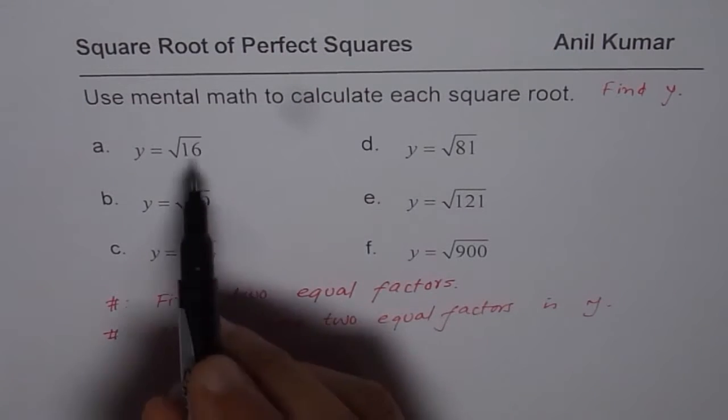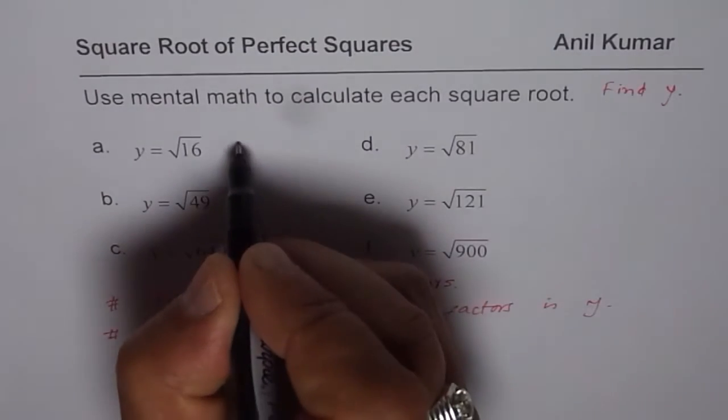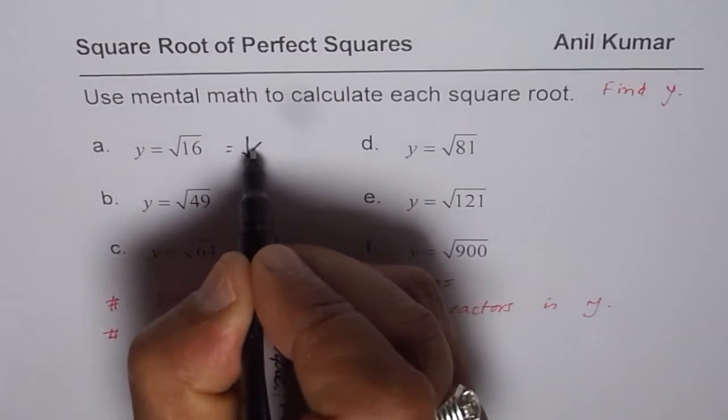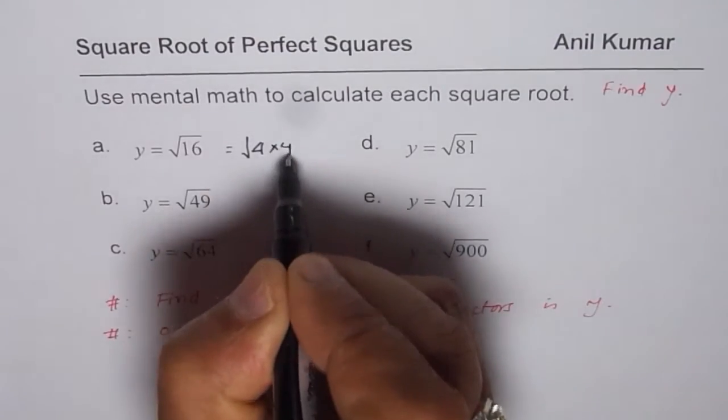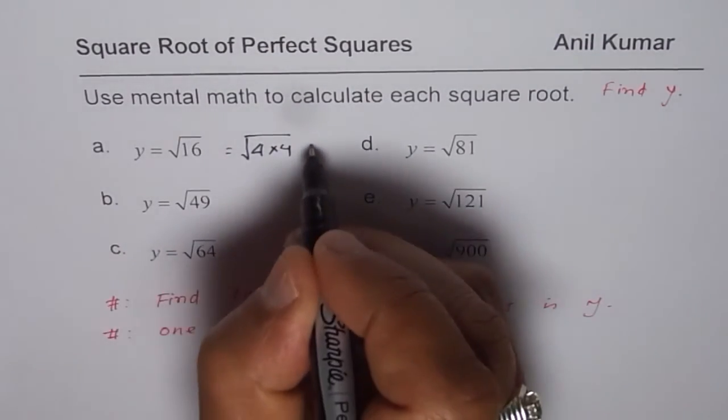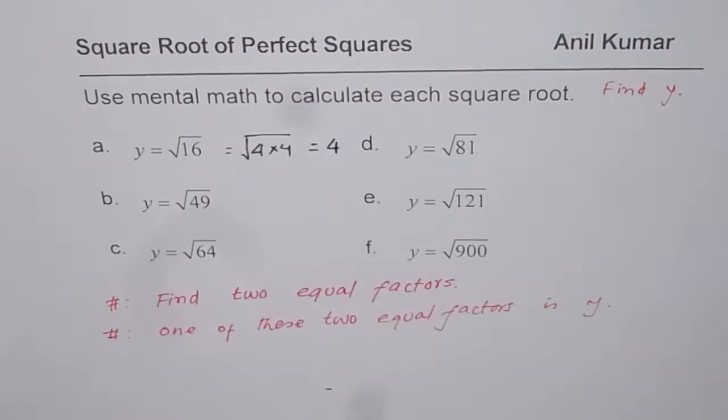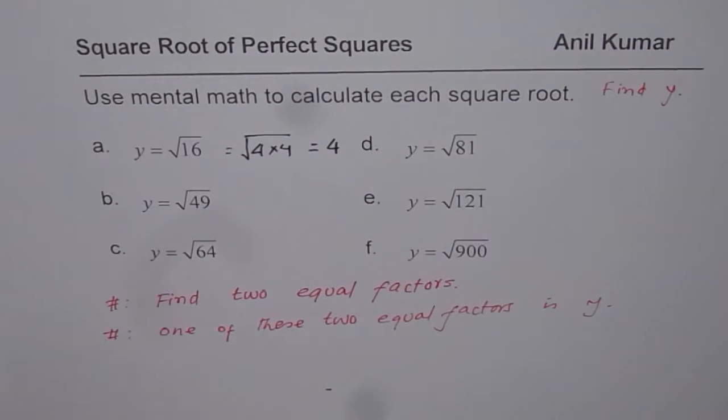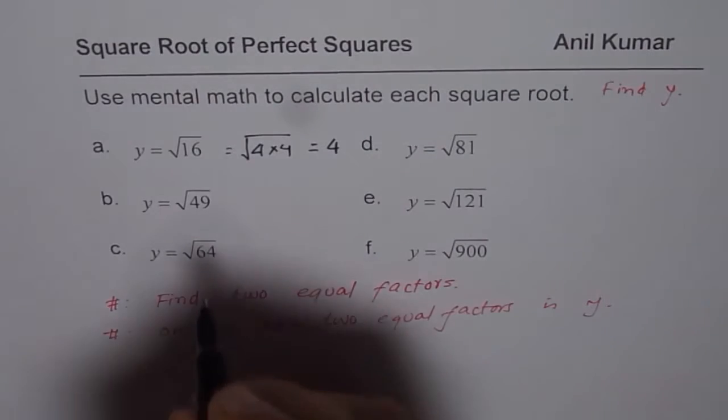Now 16 could be written as square root of 4 times 4. And therefore y or the square root of 16 is equal to one of these two factors, which is 4. So likewise, you have to do that.